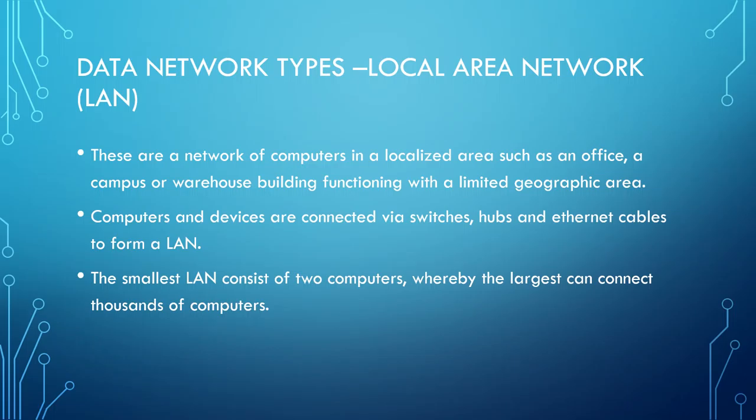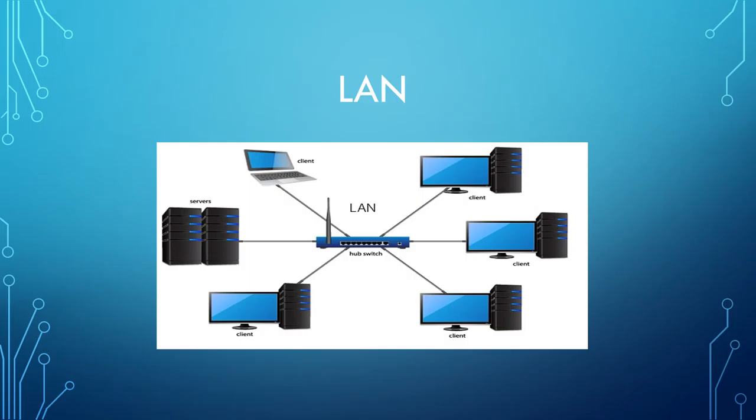Data Network Types — LAN. These are a network of computers in a localized area such as an office, campus, or warehouse building, functioning within a limited geographic location. The smallest LAN consists of two or more computers connected together, while a very large LAN can consist of thousands of computers. Computers and devices are connected via switches, hubs, and Ethernet cables to form a LAN. This diagram shows an example of a typical LAN, with servers and client devices connected via a hub or switch.